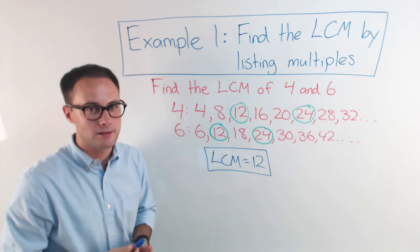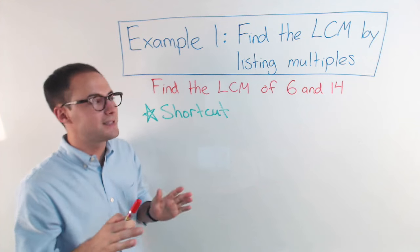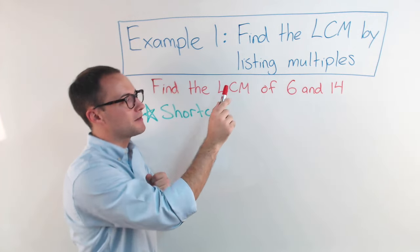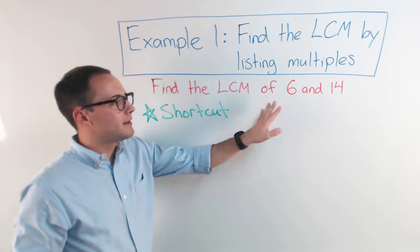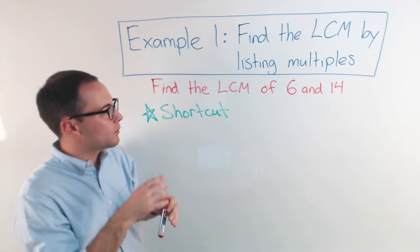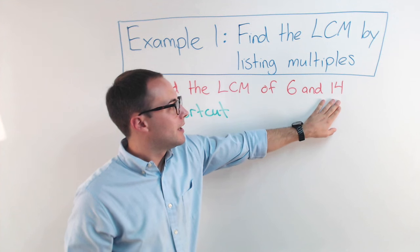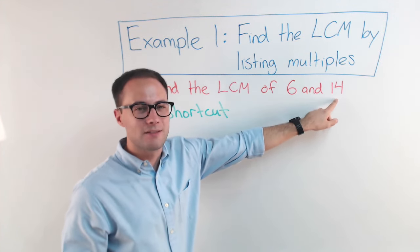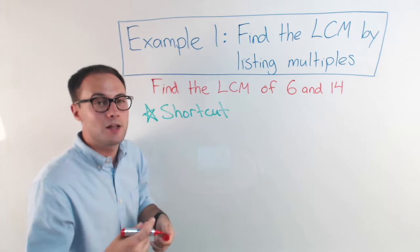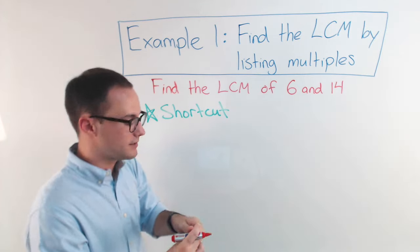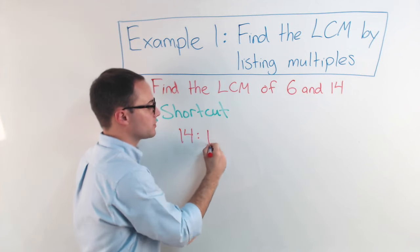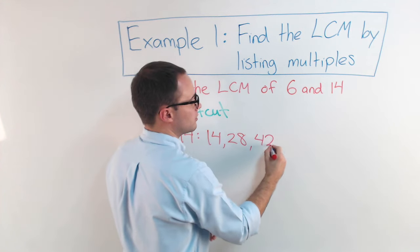Let's look at another problem. We're still finding the LCM by listing multiples, but I'm going to show you a little shortcut that can save you a lot of time. Find the LCM of six and fourteen. The LCM has to be a common multiple of both numbers, so we can use that to our advantage. Fourteen is the greatest of these numbers — would it be possible to have a common multiple less than fourteen? No, because your first multiple of fourteen is fourteen. So start listing the multiples of your greatest number, which is fourteen: fourteen, twenty-eight, forty-two, and so on.